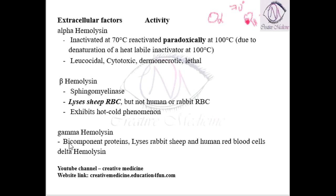Then we have gamma hemolysin. Gamma hemolysin is a bi-component protein — there are two components in gamma hemolysin. Gamma hemolysin lyses or breaks down rabbit, sheep, and even human RBCs — all three types are broken down by gamma hemolysin.